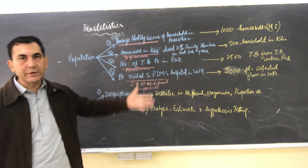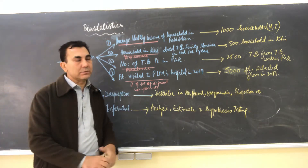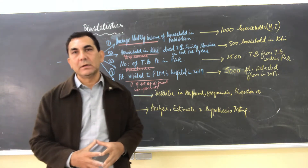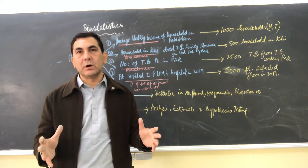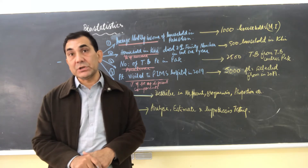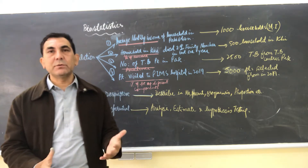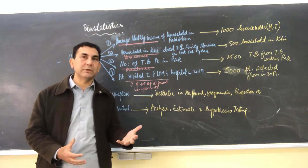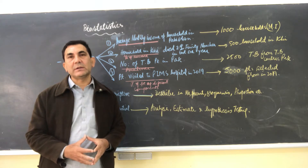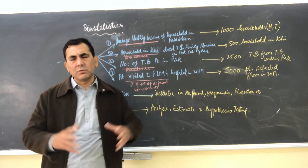Today we will learn in more detail about population and sample. As I explained in the previous lecture, the population is the entire area of interest — all people included for your research project or investigation. If you select a subset from that particular population, it is called the sample. For example, around one lakh ten thousand nurses are registered in Pakistan.